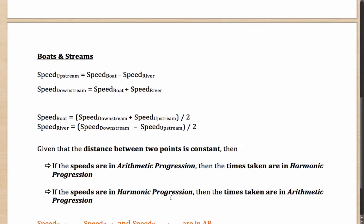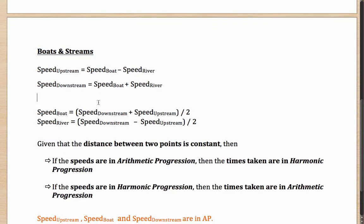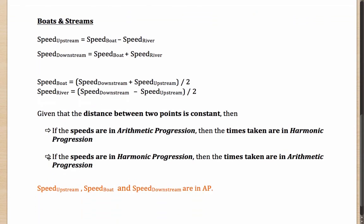This is also true the other way around that if speeds are in harmonic progression, then time taken will be in arithmetic progression. In case you are wondering what has that got to do with the topic at hand, boats and streams? Well, it has everything to do with boats and streams. The point that you need to notice is speed upstream, speed of the boat and speed downstream are in an AP or in an arithmetic progression.